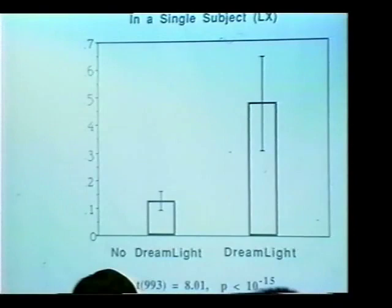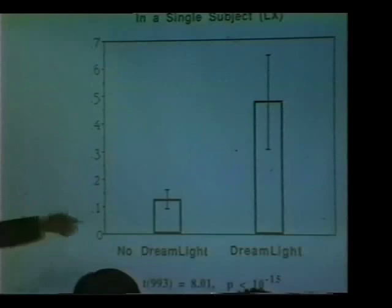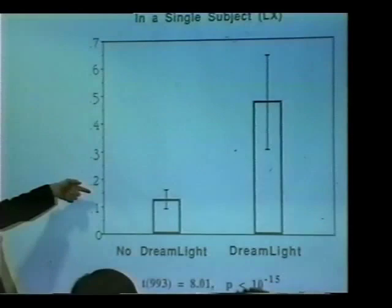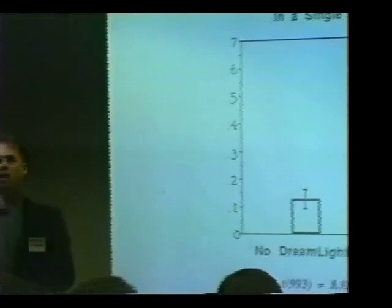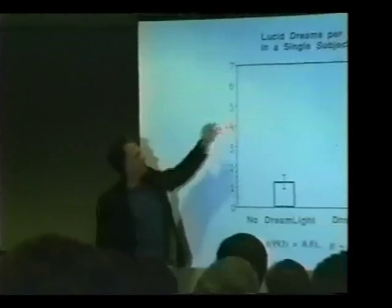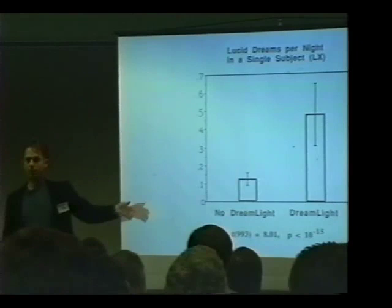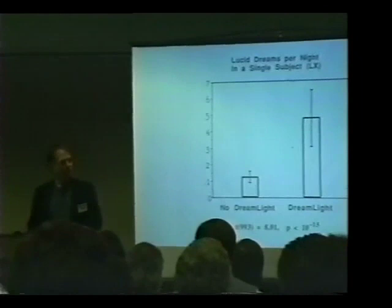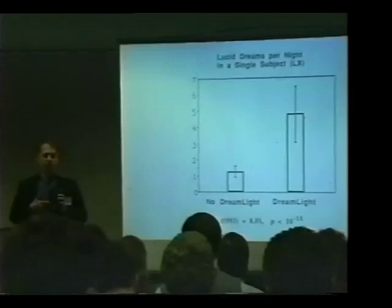To give a sense of what's possible in people who practice over a period of time: this represents 993 nights — Lynn Levitan's results, where she tested many versions. This is the latest version of the Dreamlight, but we went through many series of devices over the past six years. These were the rates of lucid dreaming per night on nights she was using the Dreamlight in whatever mode versus when she wasn't. When she wasn't using it, she was having a lucid dream in about 15% of cases — roughly once a week. When using the Dreamlight, she was up to about every other night.